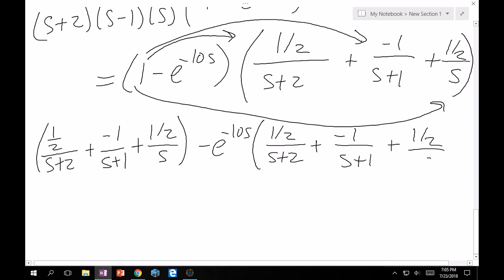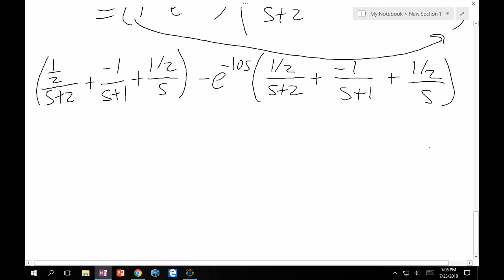The left-hand side, these are pretty easy inverse Laplaces. They're all going to be exponentials and a constant. For this one, we take inverse Laplace. This is going to be 1/2·e^(-2t) based on our table. This one is going to yield -e^(-t) because of the -1. And then this one is going to yield +1/2. Good, we're halfway done.